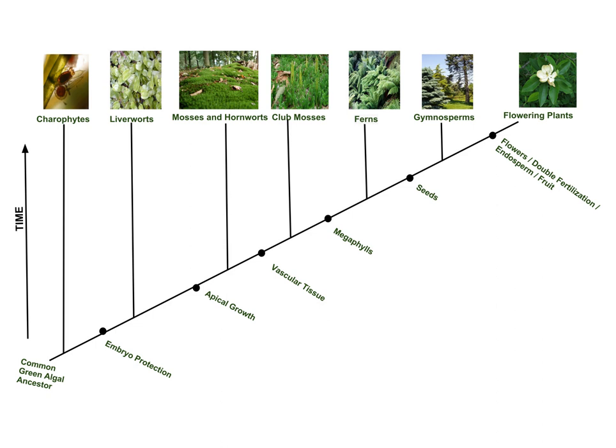Plant evolution is the subset of evolutionary phenomena that concern plants. Evolutionary phenomena are characteristics of populations that are described by averages, medians, distributions, and other statistical methods.